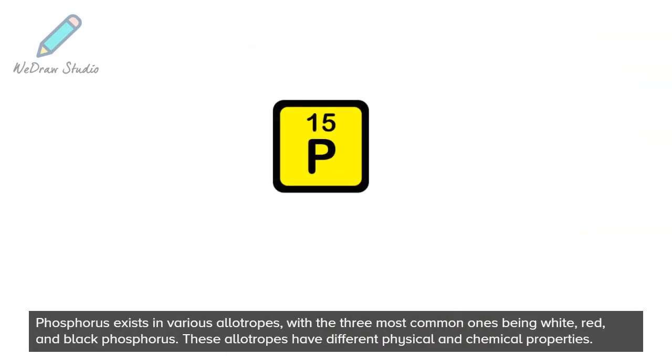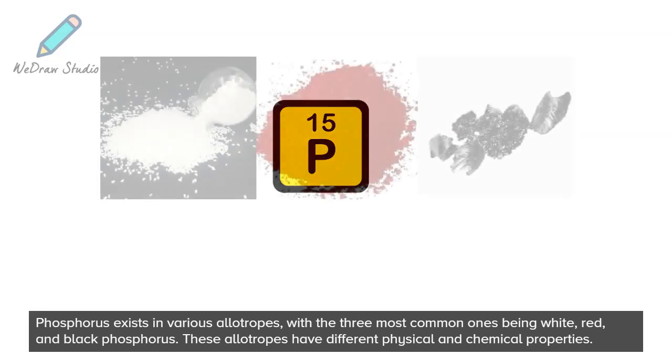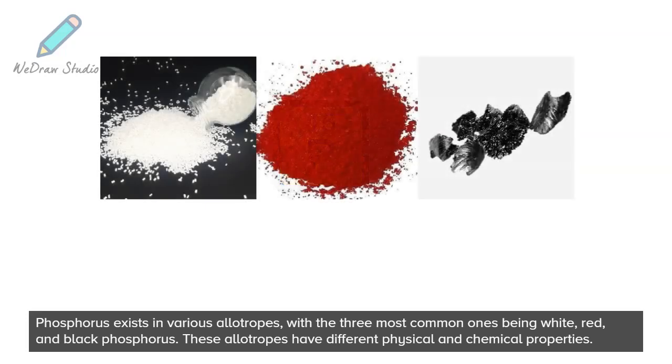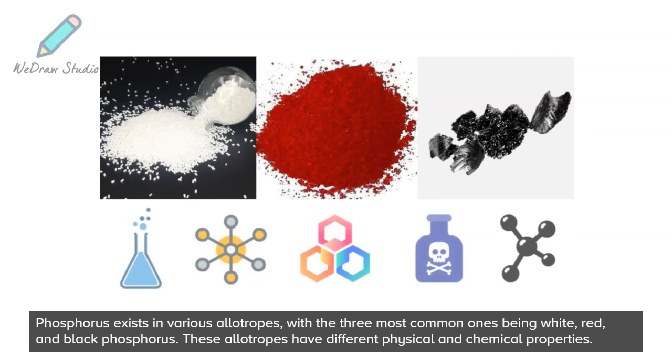Phosphorus exists in various allotropes, with the three most common ones being white, red, and black phosphorus. These allotropes have different physical and chemical properties.